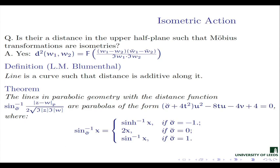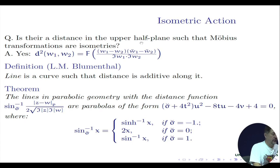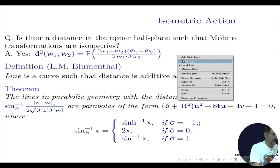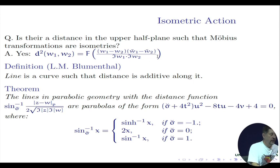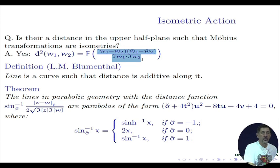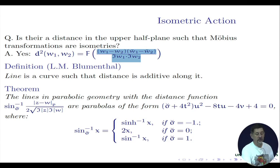Good morning. Let us return to the question of isometric action of SL2 on the upper half plane. One of the claims from the previous lecture is that such a quantity is invariant under Möbius transformation on the upper half plane, so let us prove that statement.